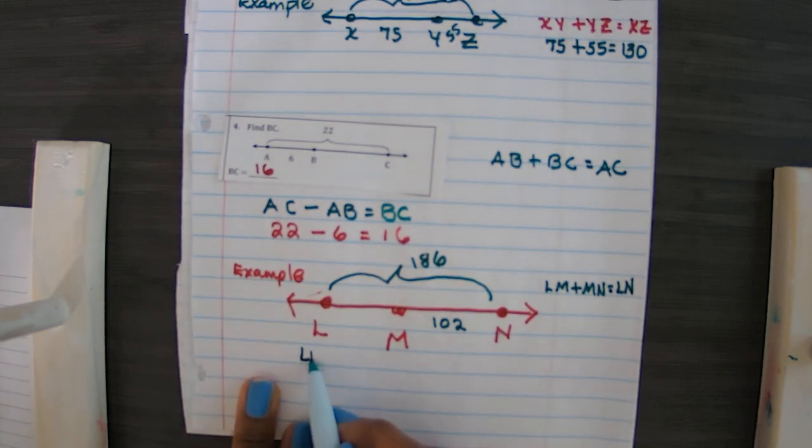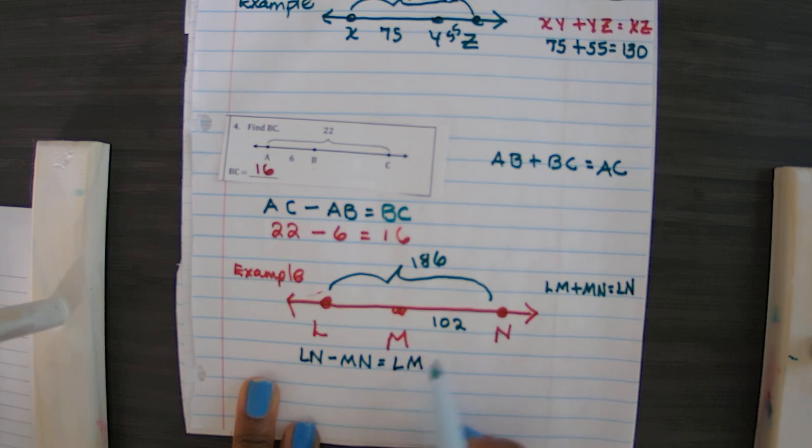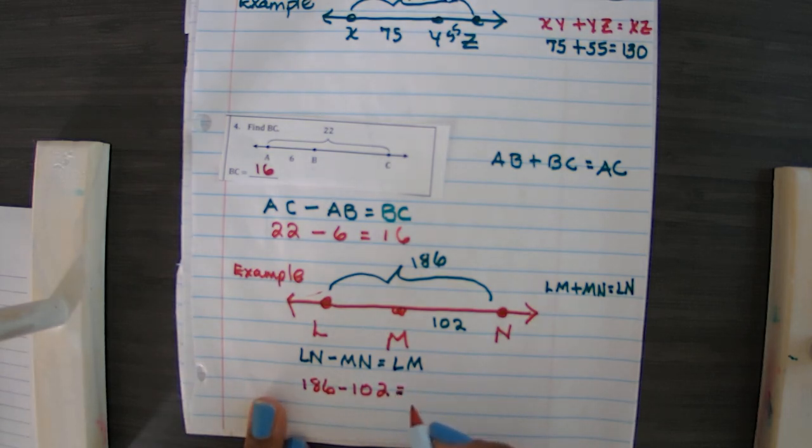So LN minus MN should give me the length of LM. So in other words, I'm going to subtract the part from the total. So I'm going to have 186 minus 102 and that's going to give me 84. It's 84 units, it's going to be the length there.